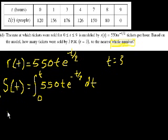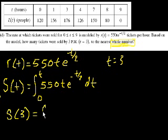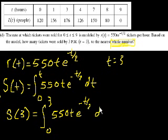And so if we want to know how many tickets were sold at time equals 3, that's just equal to the definite integral from 0 to 3, or we could also view it as the area under this curve from time equals 0 to time equals 3, of 550t times e to the minus t over 2 dt.